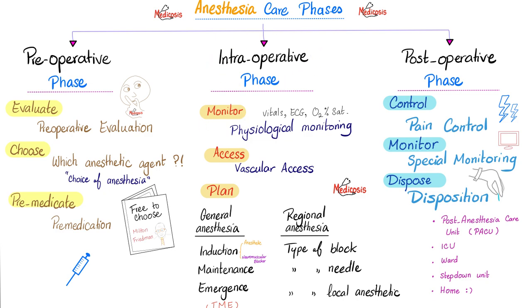Intraoperatively, you monitor, you access, you plan. Monitor physiological parameters — vital signs, EKG, oxygen saturation — this is just the minimum. Maintain robust vascular access, then plan: are you doing general anesthesia or regional anesthesia? Let's say we go general today. Induction, maintenance, emergence — IME. You do not just give the medication and run away — that's just the induction.